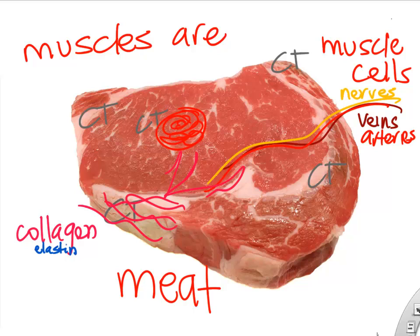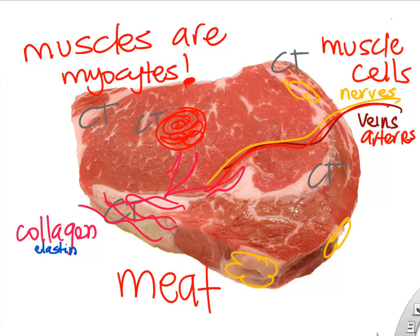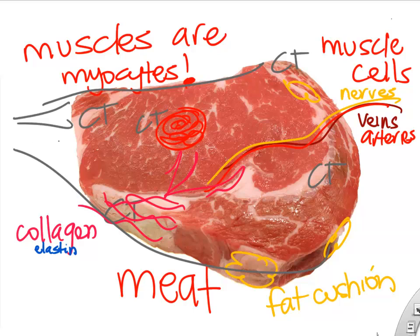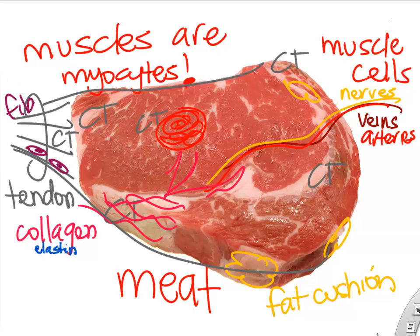Connective tissue is mainly collagen and maybe a little elastin. So we have lots of myocytes, some collagen, some elastin, and even some fat around our muscle. All that connective tissue winds down and braids into a tendon and connects the muscle — often to bone.